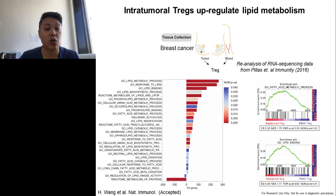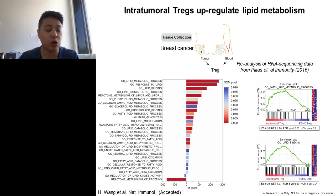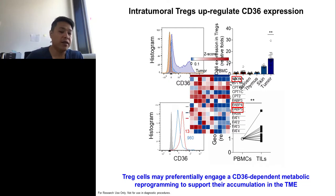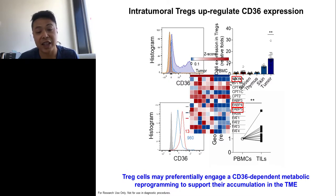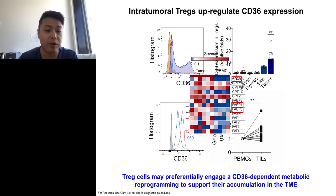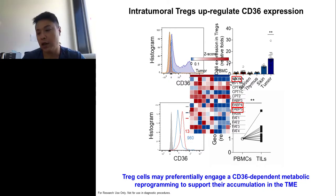Based upon this information, we started to wonder whether intratumor Tregs engage unique lipid metabolism to support their survival and function in the tumor microenvironment. In this analysis, we also focused on lipid transporters. We realized that only one lipid transporter was significantly increased by intratumor Tregs: CD36. At the same time, we also saw upregulation of FABP4 and FABP5 — lipid chaperones that help cells store and traffic lipid in the intratumor Treg compartment.